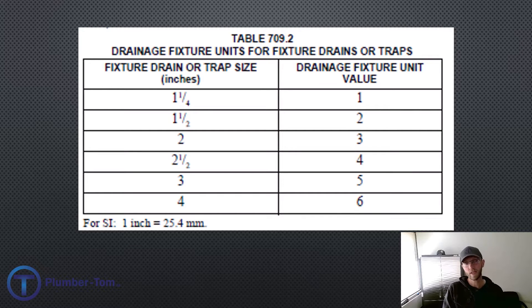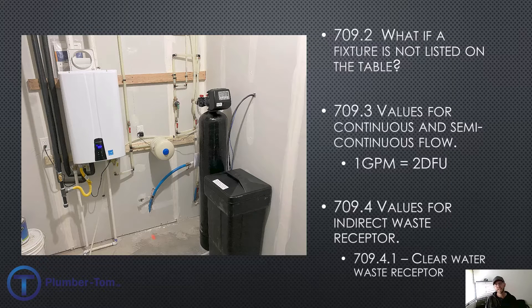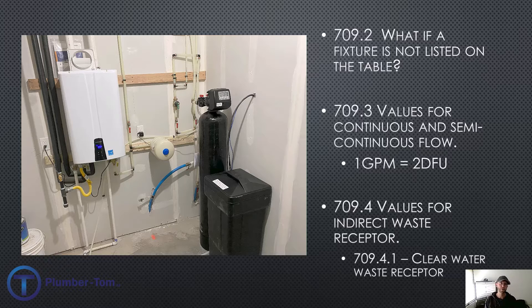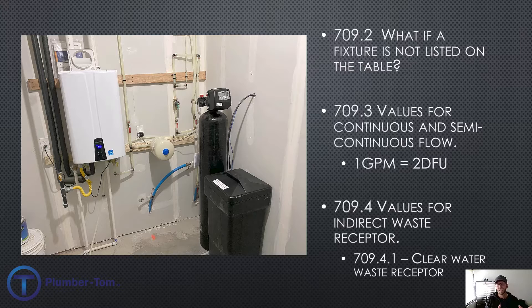If a fixture isn't on the table, you can look at the drain outlet and use table 709.2 to figure it out. Section 709.3 gives values for continuous or semi-continuous flow — for example, a pump discharging into a drain. For every one gallon per minute, you equate two drainage fixture units. Section 709.4 covers values for indirect waste receptors, such as a condensate drain dripping into a floor drain. It assigns one-half drainage fixture unit for any clear water waste. If multiple condensate drains feed one receptor, you total those up to get the drainage fixture unit for that drain.